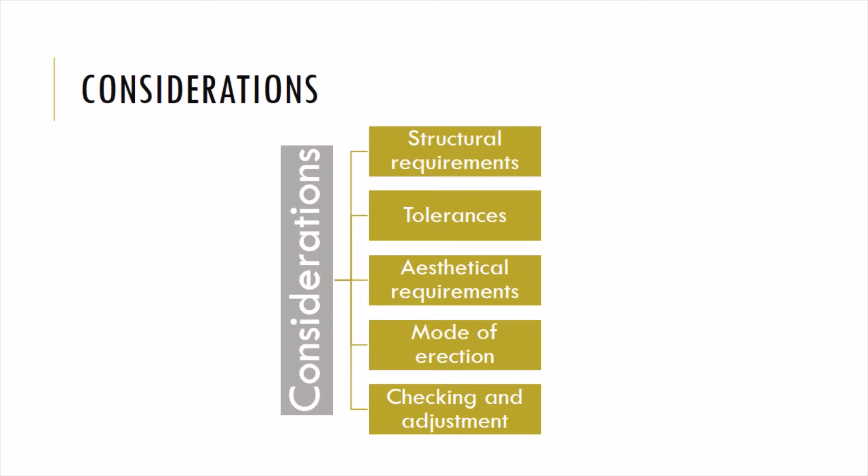When designing structural elements in prefabrication and connecting members at joints, several factors must be considered. The first is structural requirements — calculating all loads, forces, and moments, ensuring the joint can withstand maximum loads. The second is tolerances — when connecting two members, there must be adequate tolerance; if a short dimension is given and the element can't fit, it may break the structure. The third is aesthetical requirements — the work needs to be clean and aesthetically done.